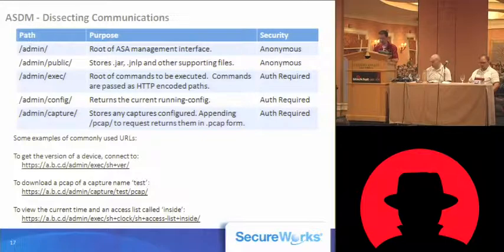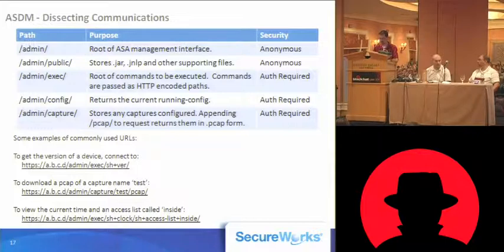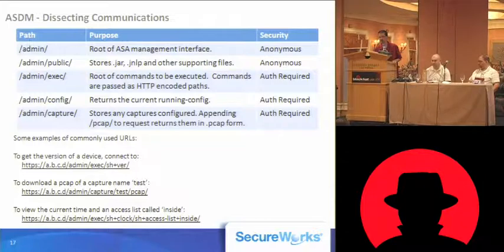There are three different paths of interest. The first is /admin/exec, which allows us to execute commands by sending the command text in the URI of the request. Admin config returns the current running configuration of the firewall. Then admin capture allows us to view any packet captures configured on the firewall, and you can get those in PCAP format by appending PCAP. At the bottom of the slide are some examples of running the show command — notice that the space is HTTP encoded.